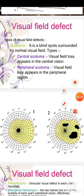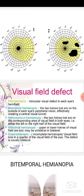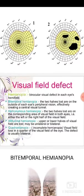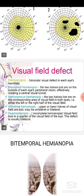Another visual field defect is hemianopia, a binocular visual defect in each eye's hemifield. Bilateral hemianopia: the two halves lost are on the outside of each eye's peripheral vision, effectively creating a central visual tunnel. Homonymous hemianopia: the two halves lost are on the corresponding area of the visual field in both eyes, either the left or right half. Altitudinal hemianopia: the upper or lower halves of the visual field are lost, which may be unilateral or bilateral.